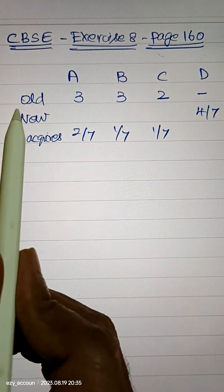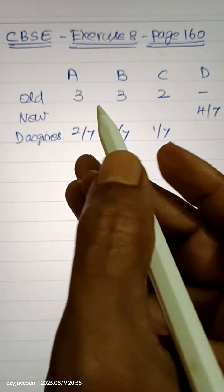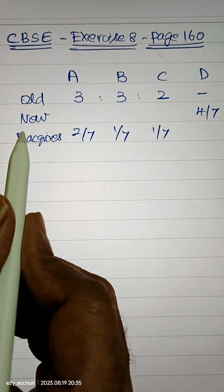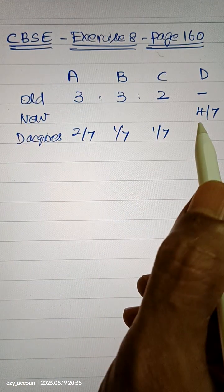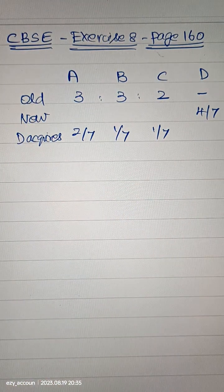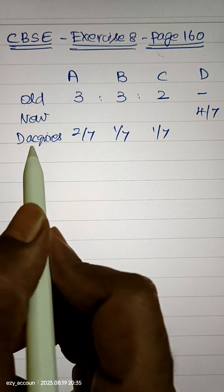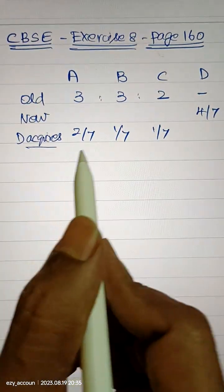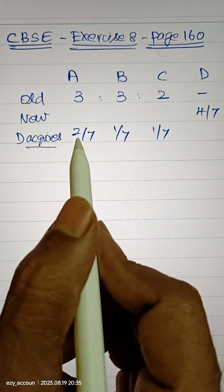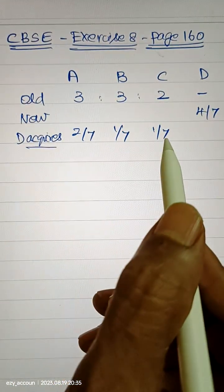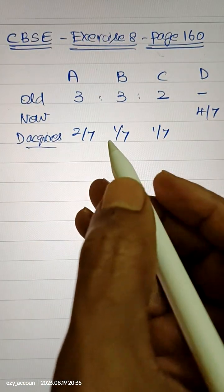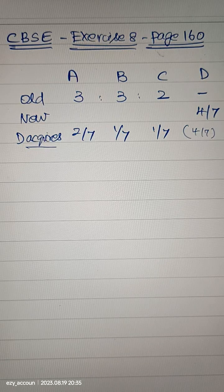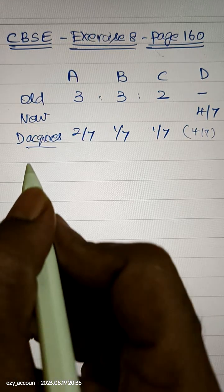The old ratio is 3 is to 3 is to 2. D joins, that is a new partner, for 4 by 7 share. Now D takes that 4 by 7 from the old partners as below: 2 by 7, 1 by 7, and 1 by 7. So if you add the three you will get 4 by 7, correct.